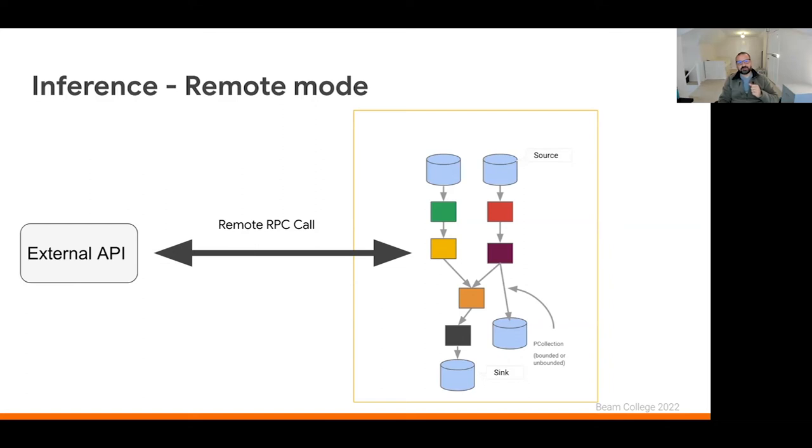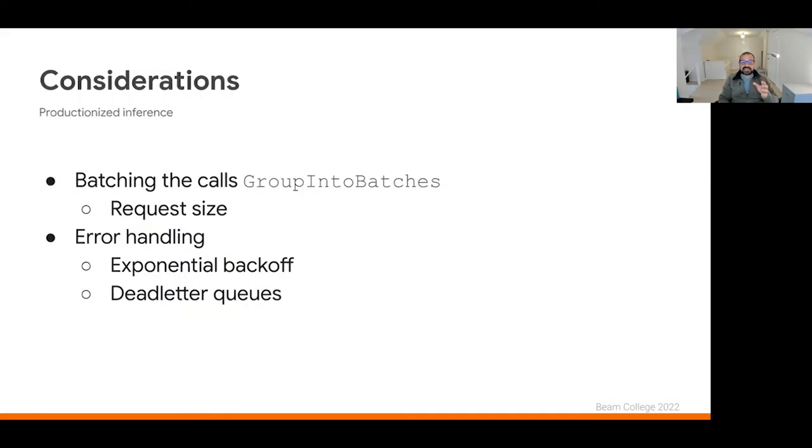For example, when you're pulling information from a database to do some enrichment, and some of the standard considerations in that model come into play here as well. So normally, we want to do things like, for example, grouping into batches to actually reduce the admin of making the RPC call. So there's more data going back and forth with each call. Strongly recommend the use of the group into batches utility transforms that exist in Python and Java. These have become quite comprehensive. And we can adjust things like the number of elements, the byte size, which you may need for the API that's being called.